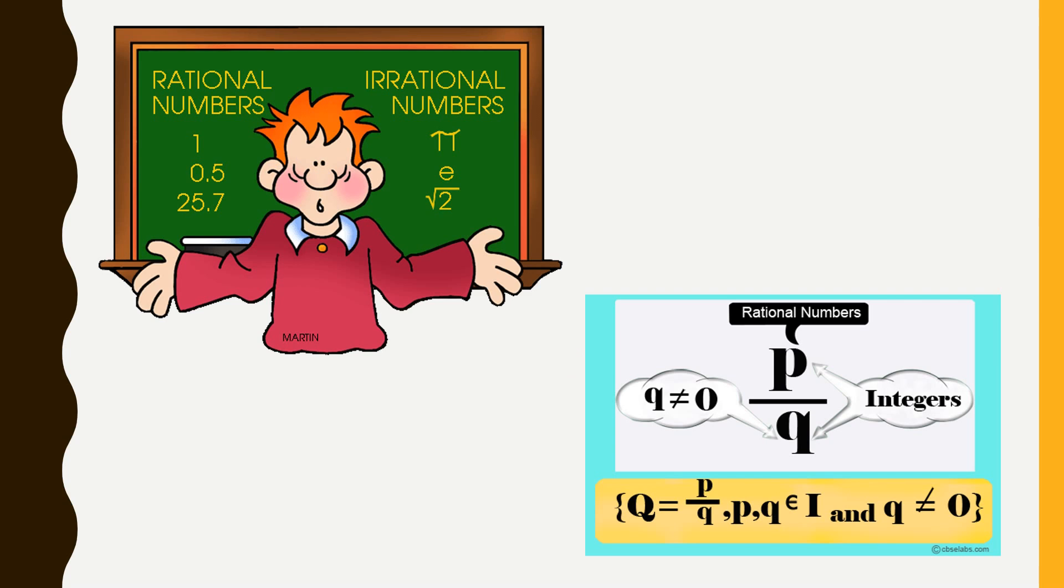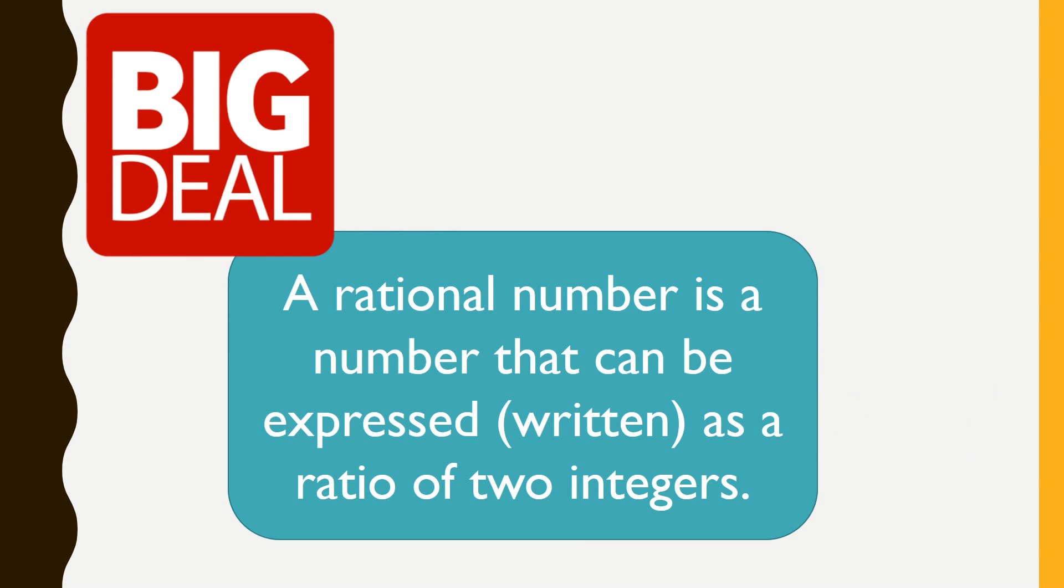But not all fractions, it turns out, are rational. Like, for example, you could do pi divided by one, and that's still irrational, but it's also a fraction. So, well, a rational number, specifically, that's a number that could be written or expressed as a ratio of two integers. Clear as mud, right? Well, not if you don't know what integers are.